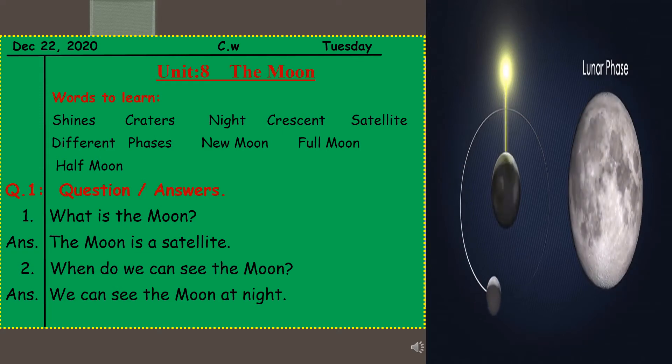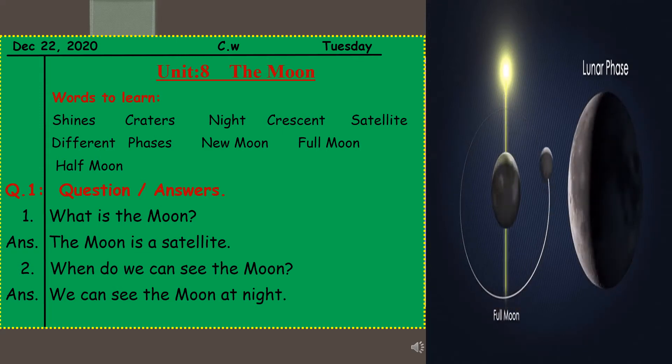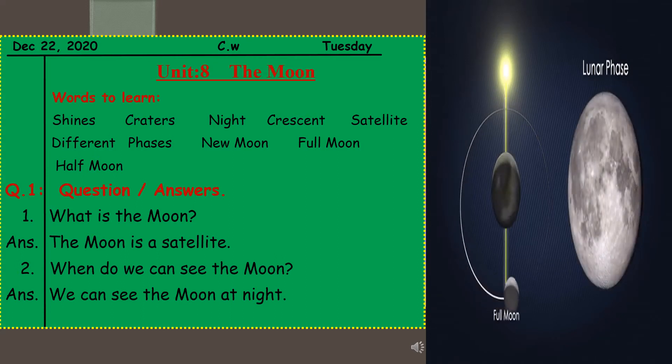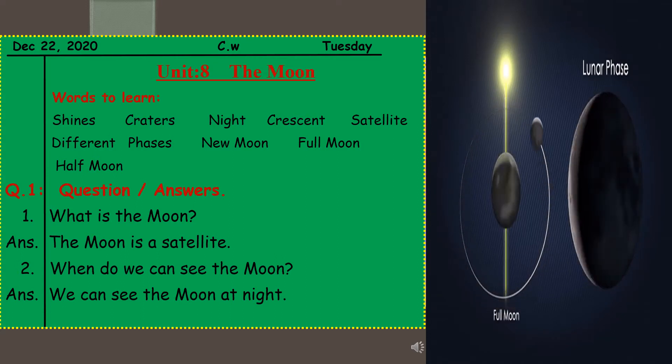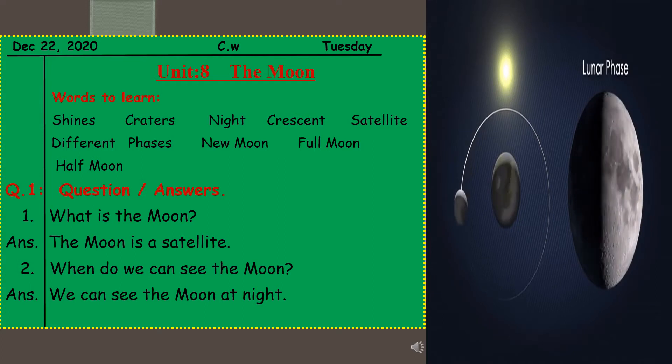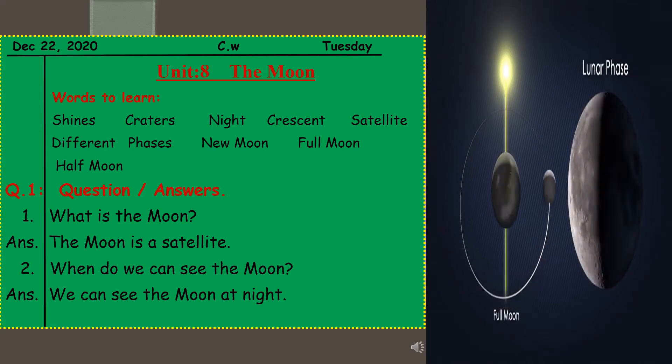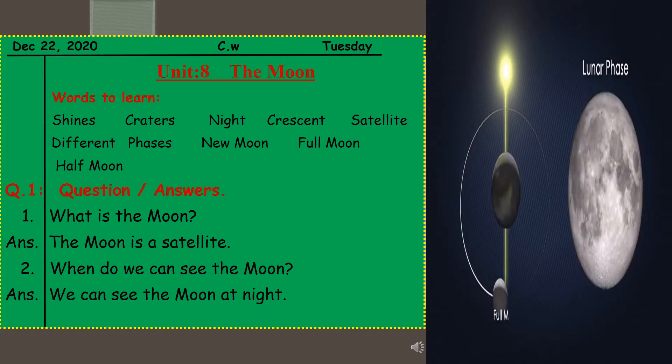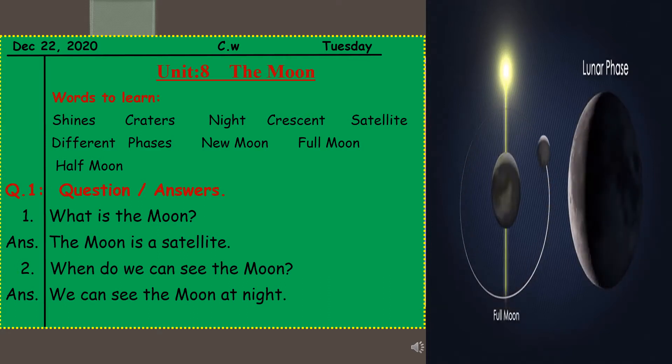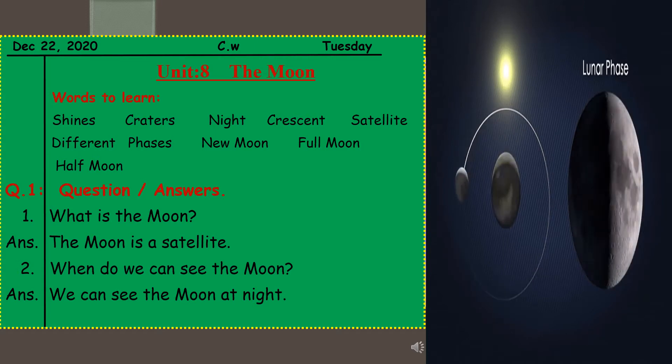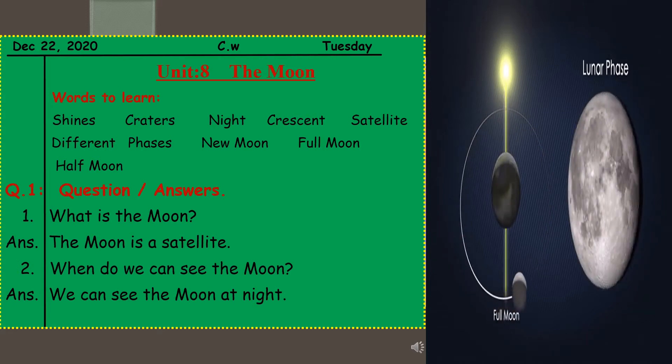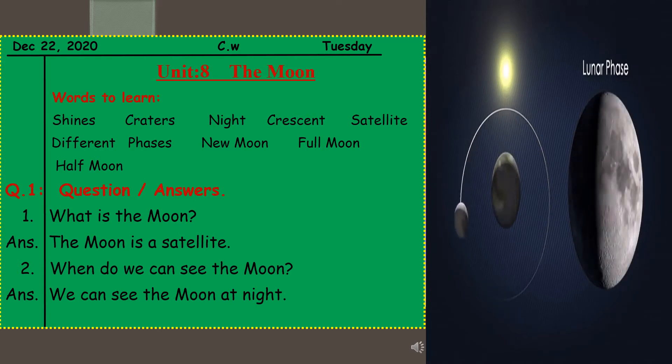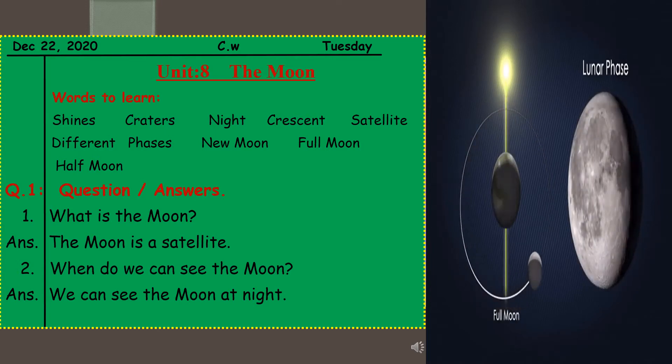Write down words to learn. There are some words you have to learn, the spellings of the word by heart. So let's begin. Shines. First, what is shines? S-H-I-N-E-S, shines. The sun shines during the day, okay? So you have to write the word shines.